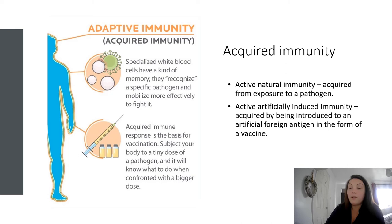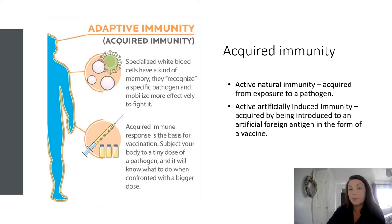Natural passive immunity is when antibodies are passed from person to person, such as from mother to unborn child. Immunity passed on in this way can provide protection for up to six months. Artificially induced passive immunity is acquired when a person receives antibodies made by someone else in the form of a transfusion or injection. Protection from artificially induced passive immunity lasts for only weeks, as the immune system is not stimulated in this process.